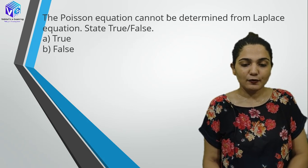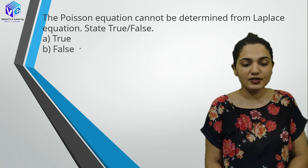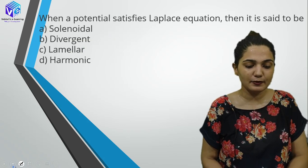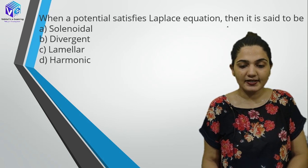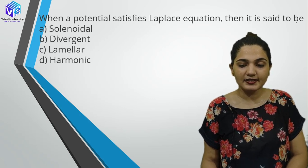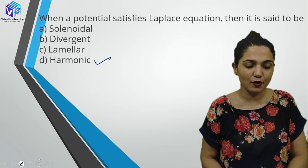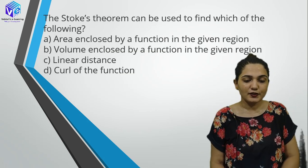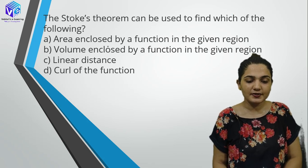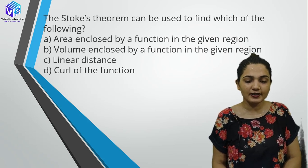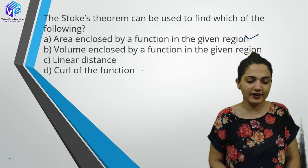The Poisson's equation cannot be determined from Laplace equation — no, Poisson's equation is actually derived from the Laplace equation. When a potential satisfies Laplace equation, it is said to be harmonic. Stokes theorem can be used to find out the area enclosed by a function in a given region.